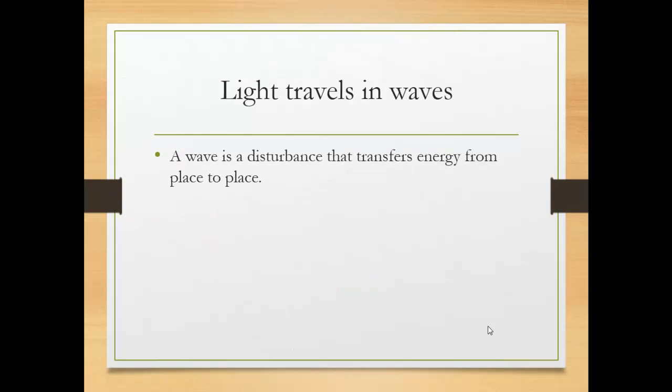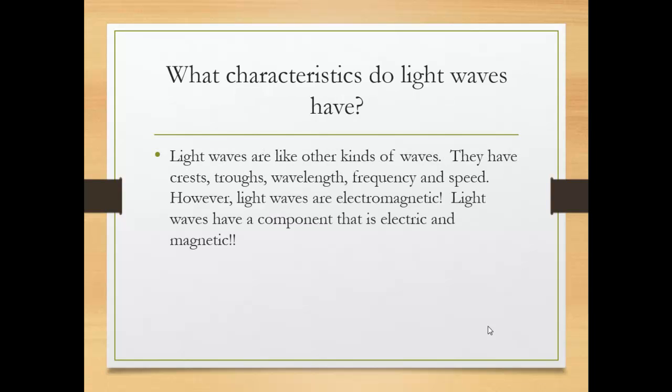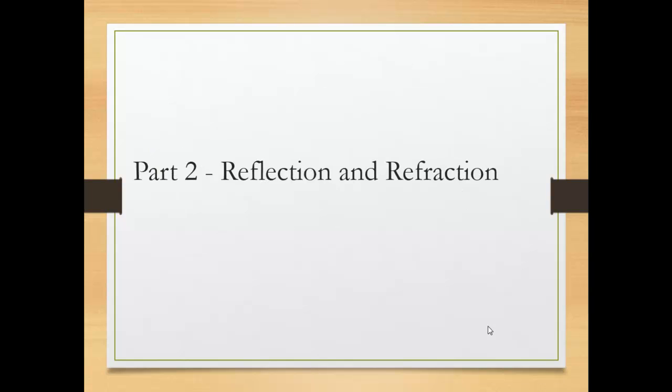A wave is the disturbance that transfers energy from place to place. We know that the light travels in waves. Light waves are like other kinds of waves. They have crest, troughs, wavelengths, frequency, and speed. However, light waves are electromagnetic. Light waves have a component that is electric and magnetic.